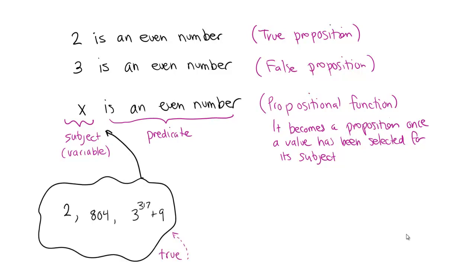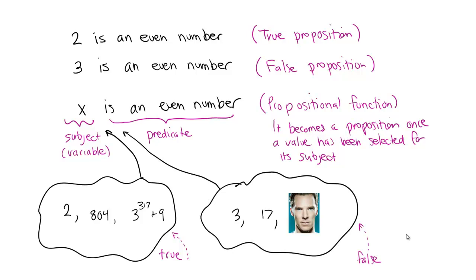There are lots of values you could plug in that make the statement true: 2, 804, and 3 to the 317th power plus 9 are all even numbers. That last one is an odd number plus an odd number, which is always even — we'll prove that in module 2. On the other hand, values like 3, 17, and Benedict Cumberbatch are examples of things that are not even numbers, making the statement false.